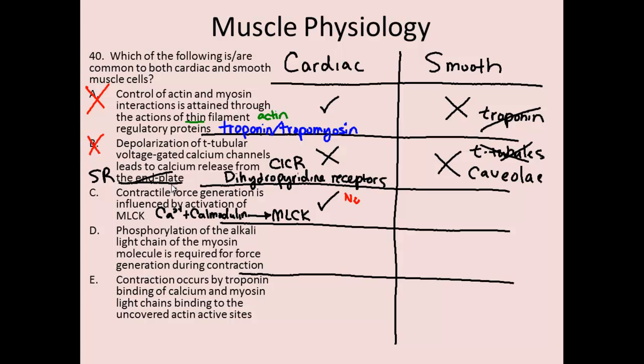Importantly, myosin light chain kinase is not essential to cardiac muscle function — we don't have to have it — but it can regulate force generation for cardiac muscle. So it's a true statement even though it's not absolutely required. It's also a very true statement for smooth muscle, where it's actually required. So we already know before going through the remaining responses that the correct answer is C.